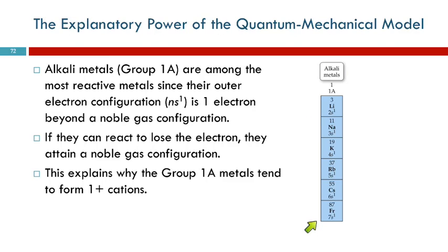So they do whenever they can. They're going to lose that one valence electron. That's why they form plus one ions. Because when lithium loses that s electron, that 2s electron, it now has the same number of electrons as helium. It has the same electron configuration as the noble gas.